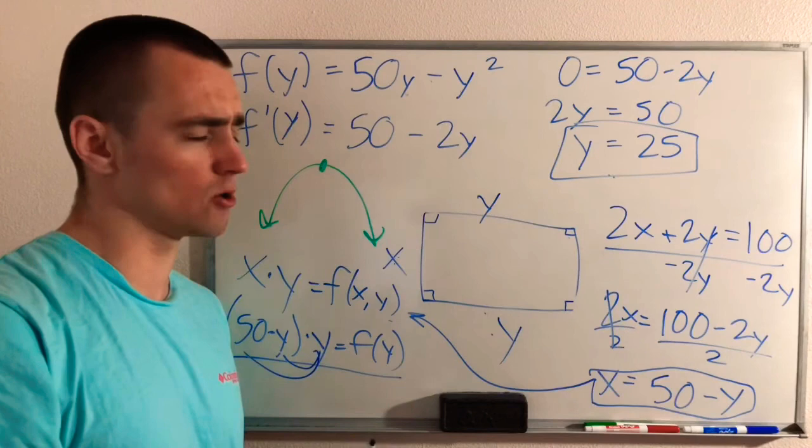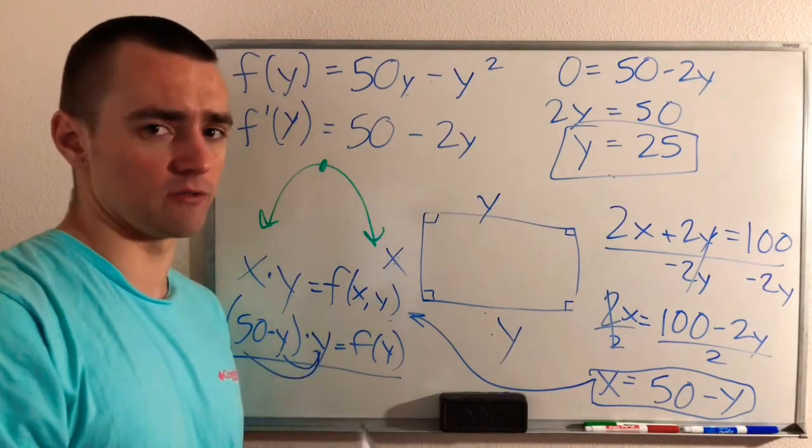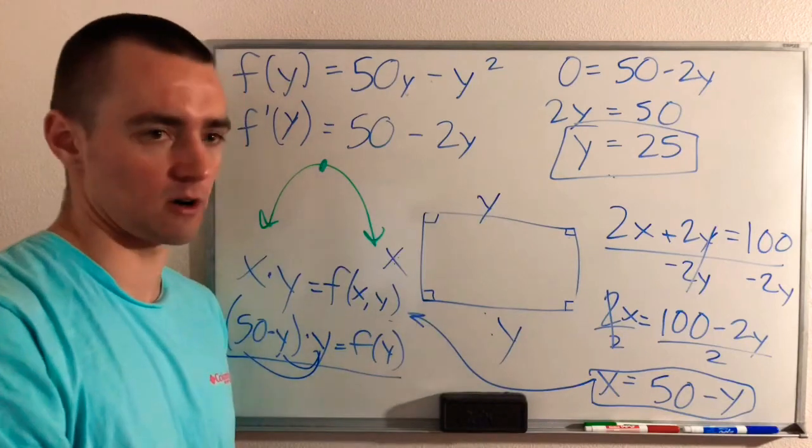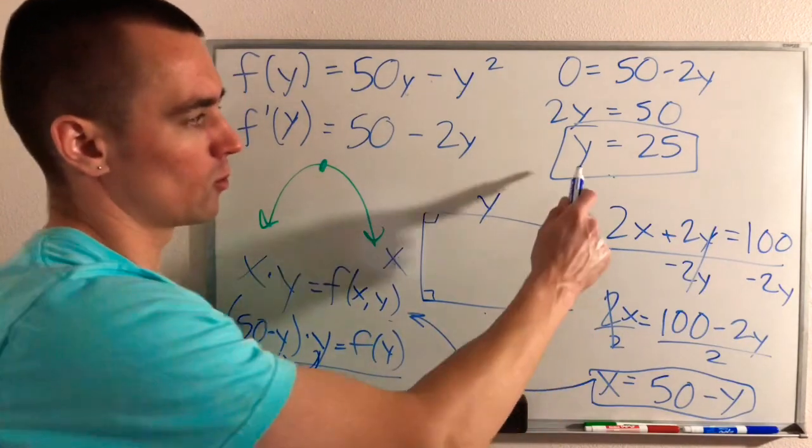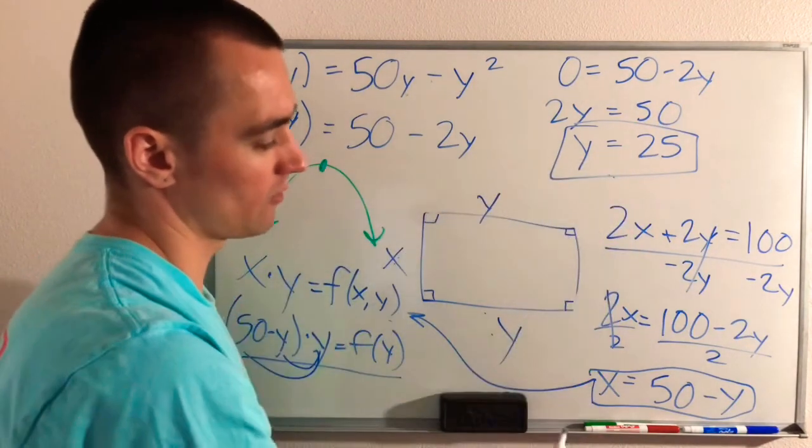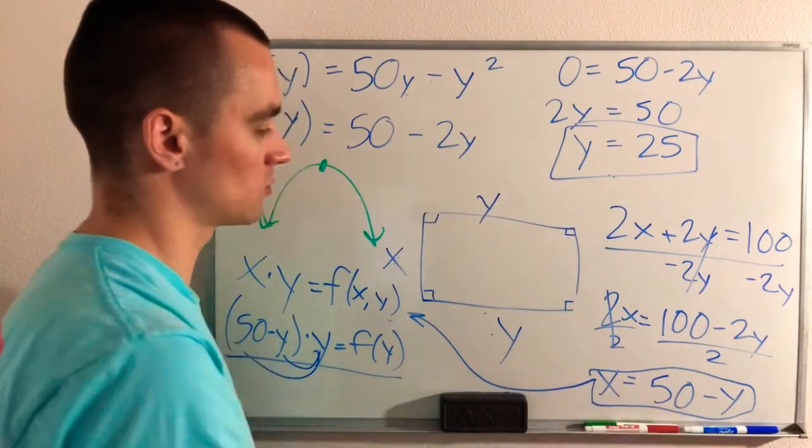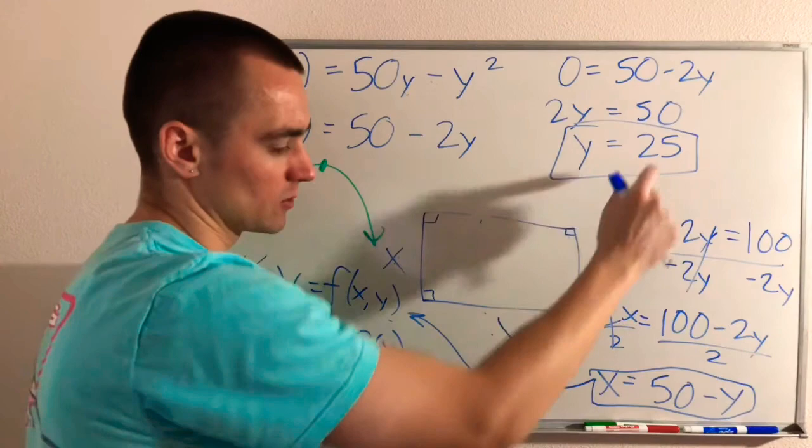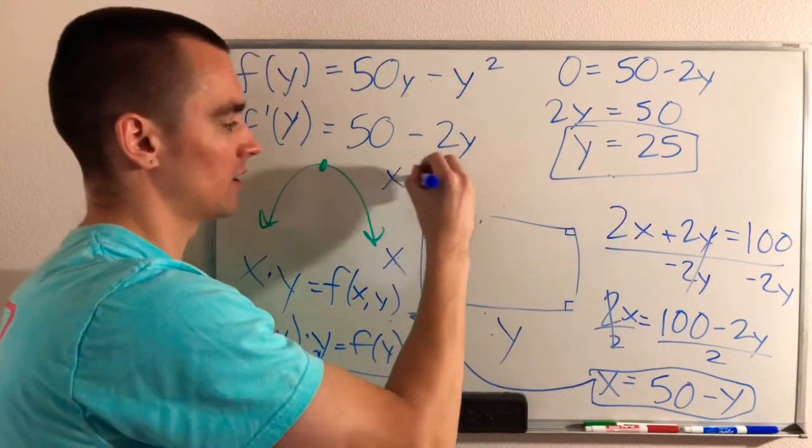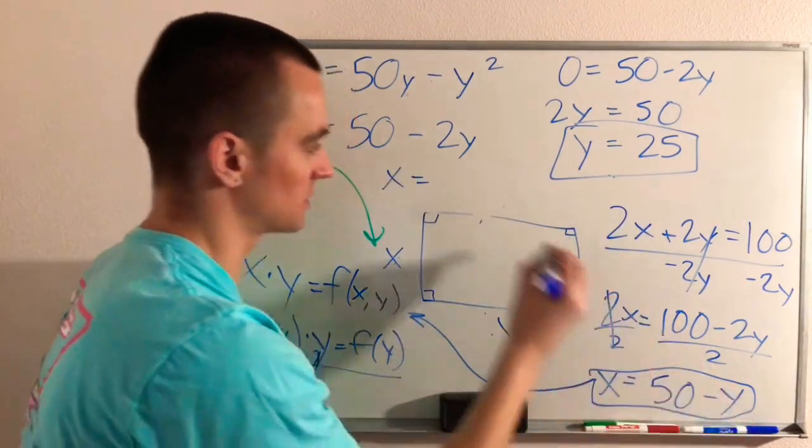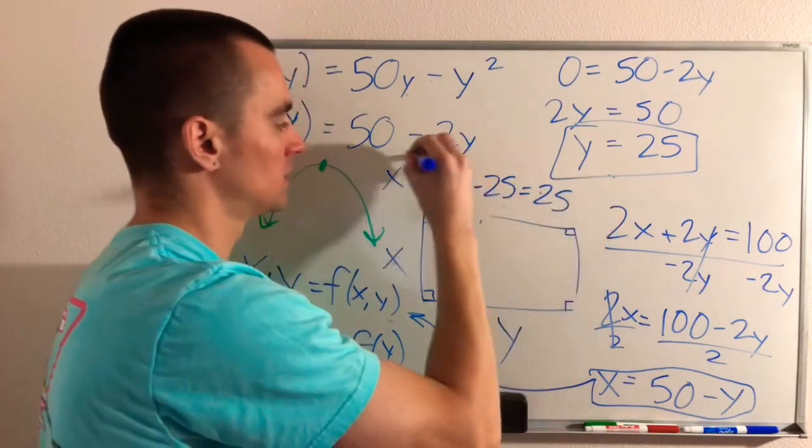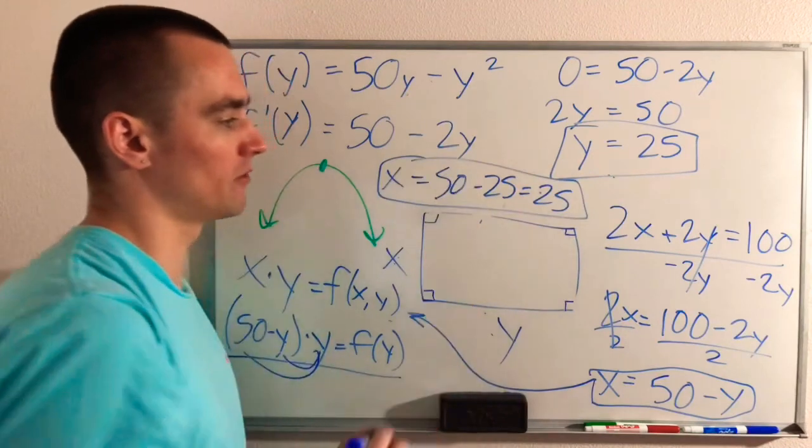But remember, what the question asked us to do was find the dimensions of this rectangle. So we need to figure out both X and Y to give us our dimensions. Well, remember, we know that Y is 25, and then we know that X is 50 minus Y. So if we just simply plug in Y equals 25 into this equation, that'll give us X equals 50 minus 25, which is 25.